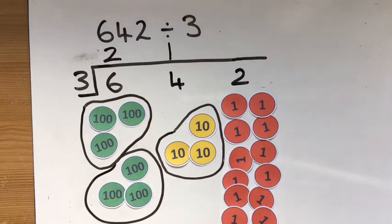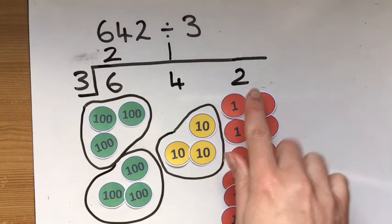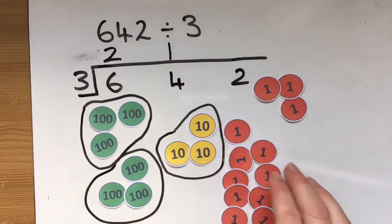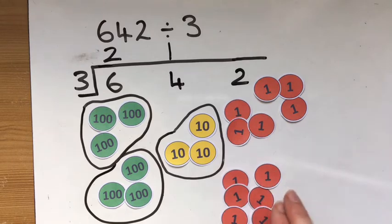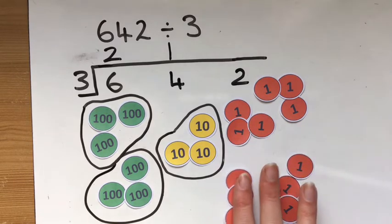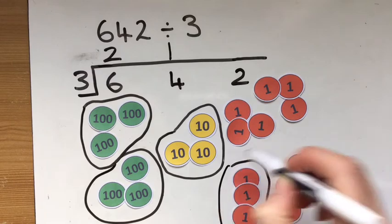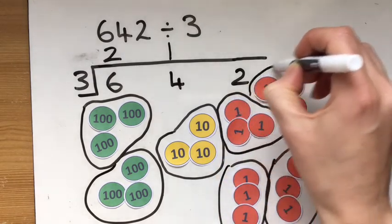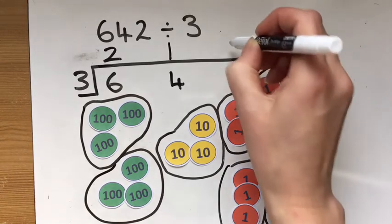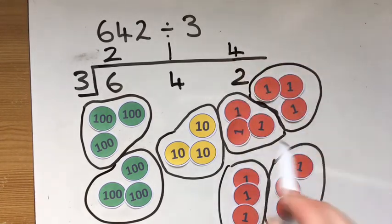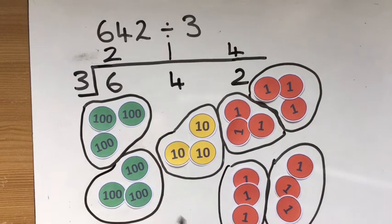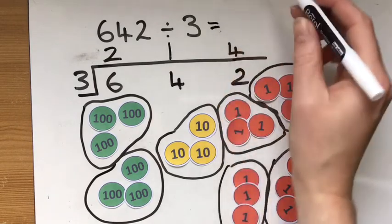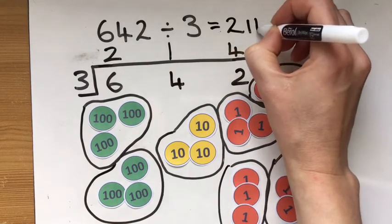How many groups of 3 can I get here now? I have my 2 already and 10 more so I've got 12 all together. I've got 1 group of 3, 2, 3, and 4. 1, 2, 3, and 4. And you can see there's no ones left over. So I'm finished now. 642 divided by 3 is 214.